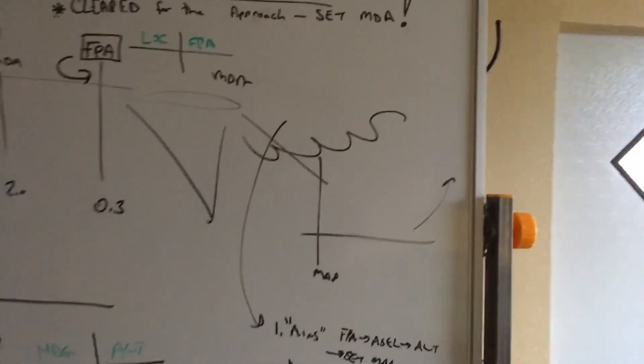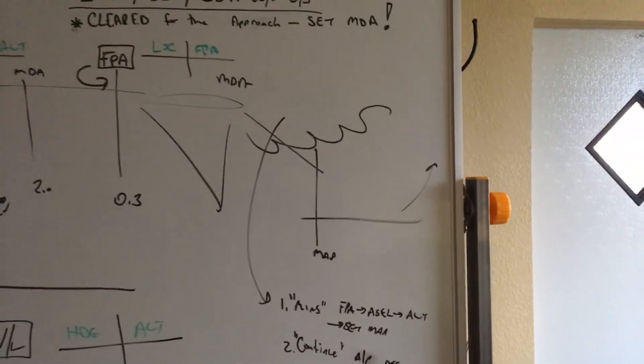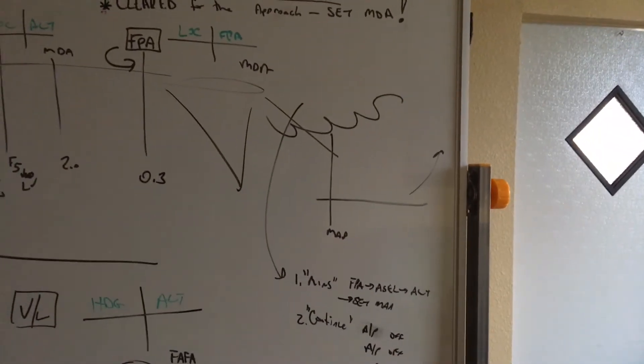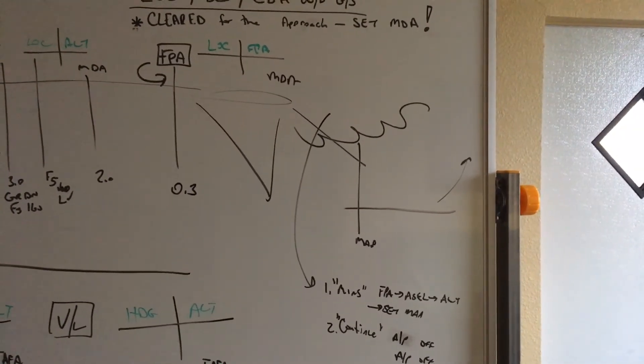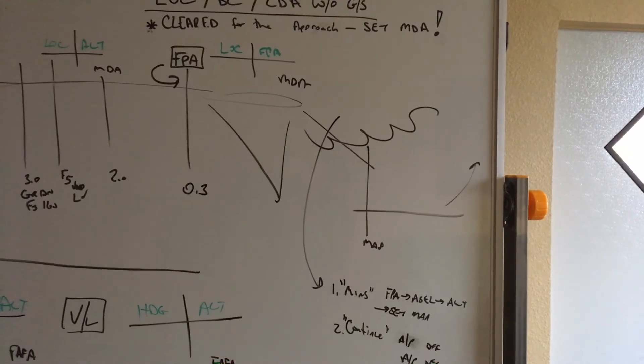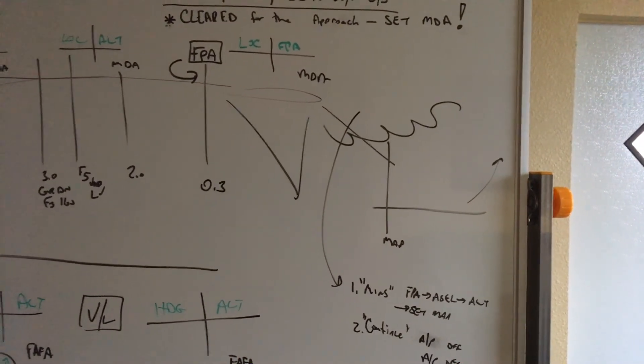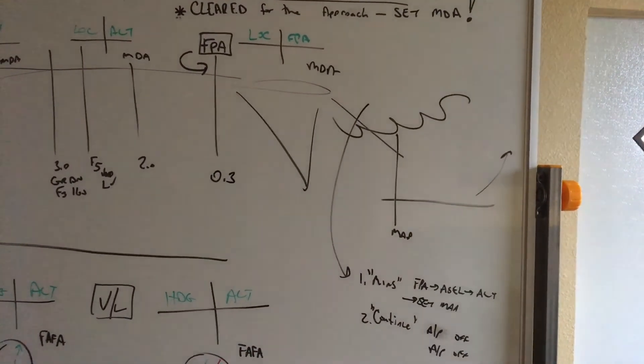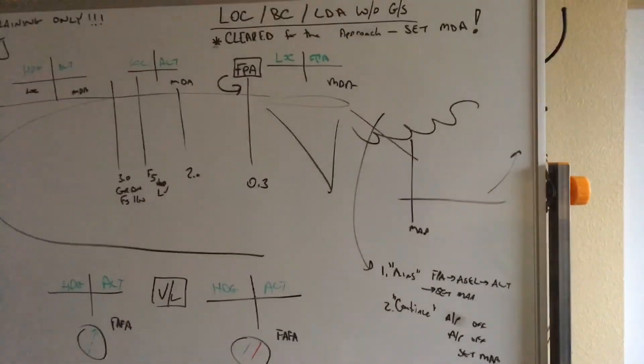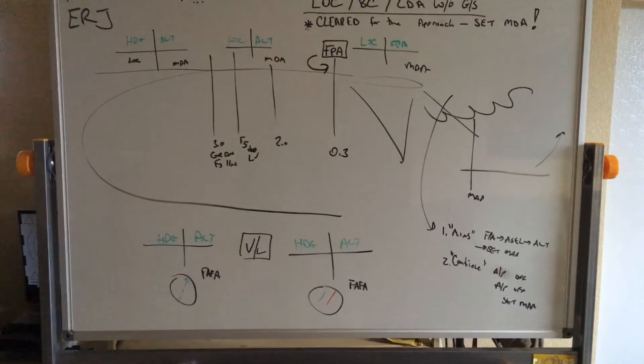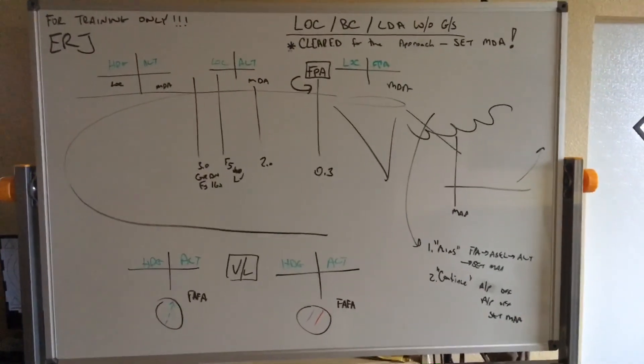Wait for the aircraft to accelerate above the F bug, and then we say flaps 1. Wait for it to accelerate above the F bug, and then flaps up. We're waiting for our monitoring pilot to say flaps up, at which point in time we ask for after takeoff checklist. And that's the localizer approach at the final approach fix altitude.